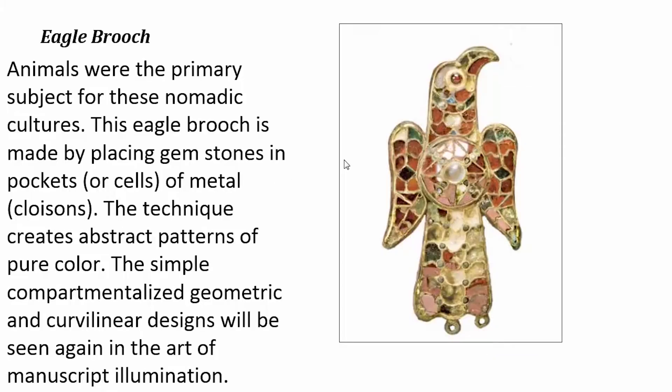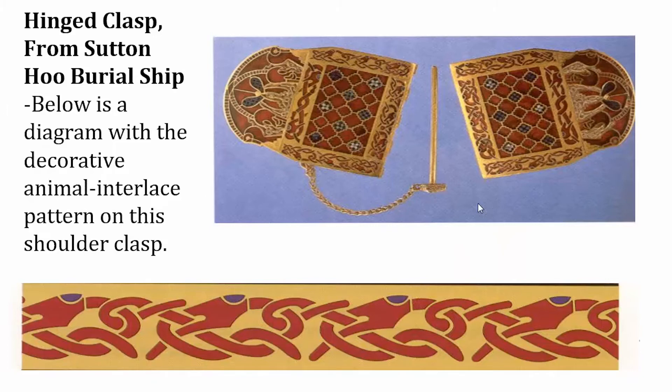For most of this portable art, animals are the primary subject. This is an eagle brooch, and again it uses the cloisonné technique with millefiori glass and gemstones. We have the stylized geometry and curvilinear designs, and we're going to see this over and over again when we start looking at manuscript illumination. These are all the things that the Christian artists — these monks — would have come in contact with when they began populating Europe.